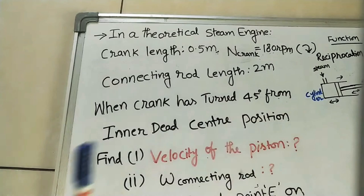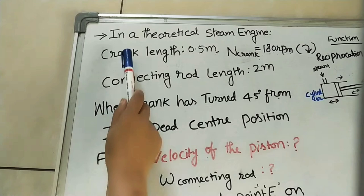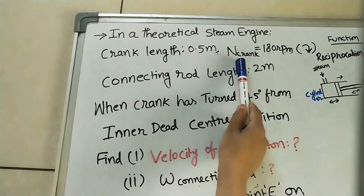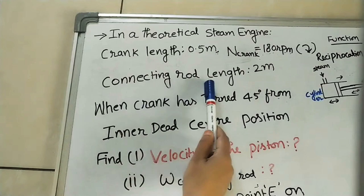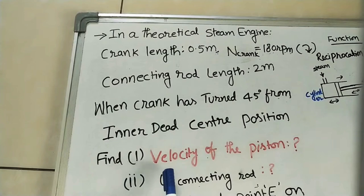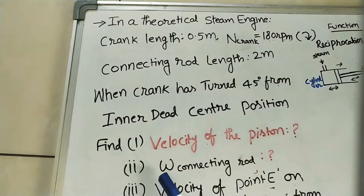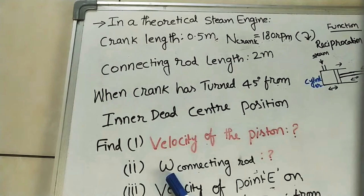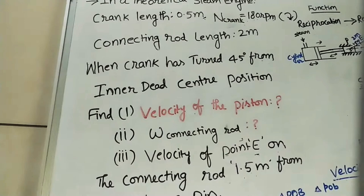In today's class, we will discuss the velocity diagram of a given steam engine. This is the textbook question. In a theoretical steam engine, crank length is 0.5 meters and crank speed is 180 RPM clockwise. Connecting rod length is 2 meters. When the crank has turned 45 degrees from the inner dead center position, we need to find: the velocity of the piston, the angular velocity of the connecting rod (omega), and we have to find this connecting rod angular speed.